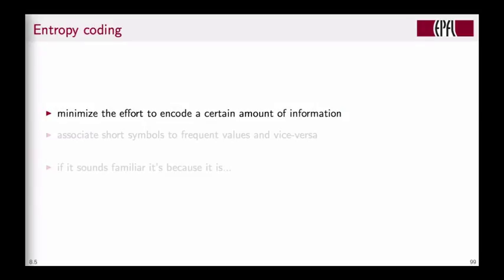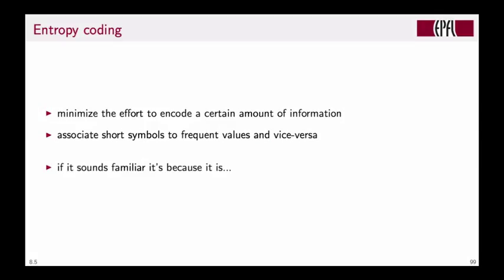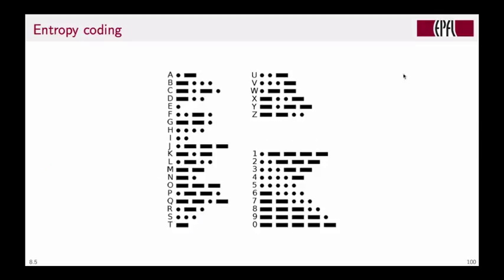Finally, let's consider entropy coding. The idea is to minimize effort to encode information by associating short symbols to frequently used values. This might sound familiar because it is—the Morse code invented in 1836 is a typical example where we use very short symbols for frequent values.